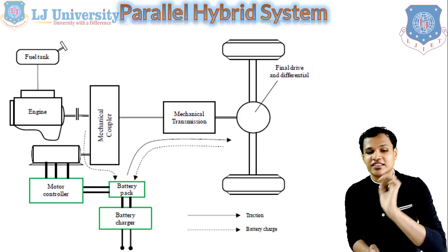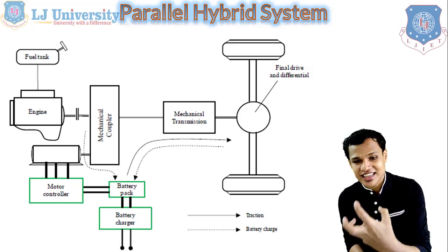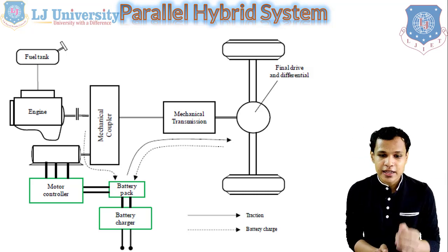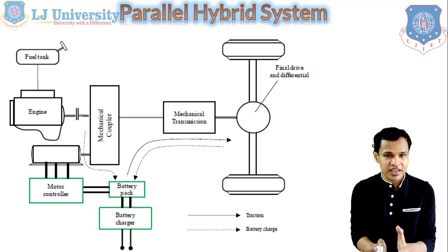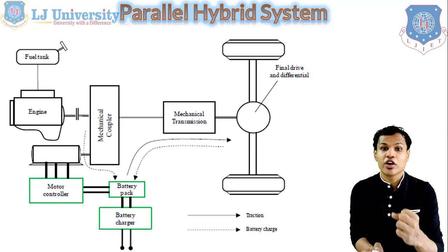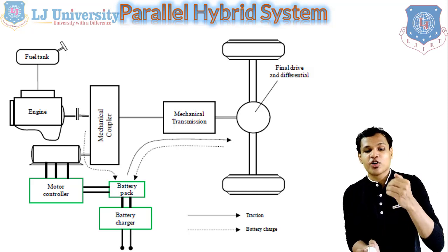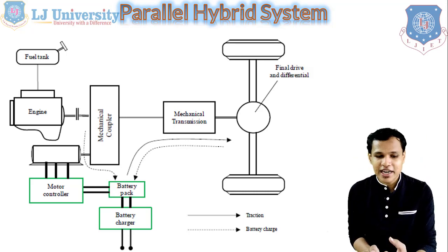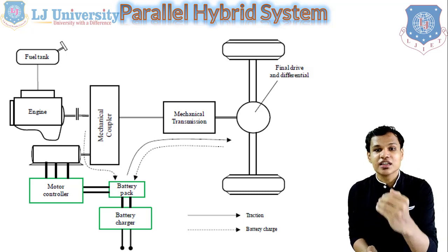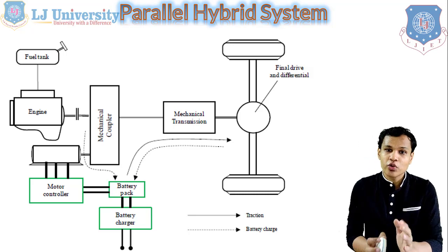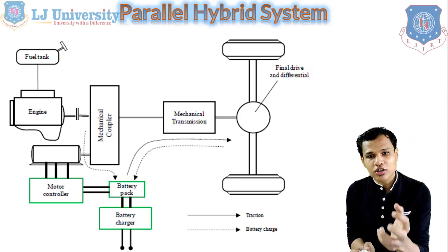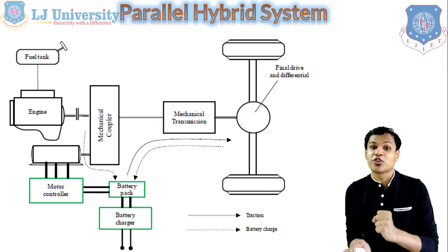In the parallel hybrid system, the mechanical coupler is directly connected with our engine, and that directly supplies the power of the IC engine to our mechanical transmission system, which is connected with our differential and final drive in the rear axle. Additionally, the battery pack is connected with our motor controller, and that motor controller is further connected with our mechanical coupler, which assists during higher load. During the idling condition, power is only transmitted from the electric motor and our IC engine stays off, which saves fuel and reduces emissions from the engine.